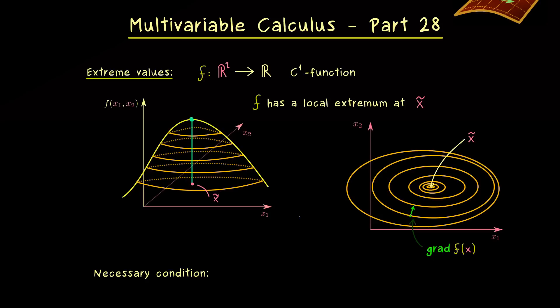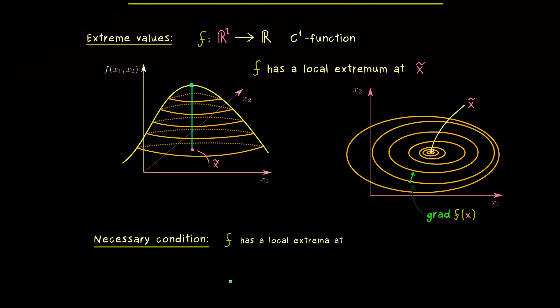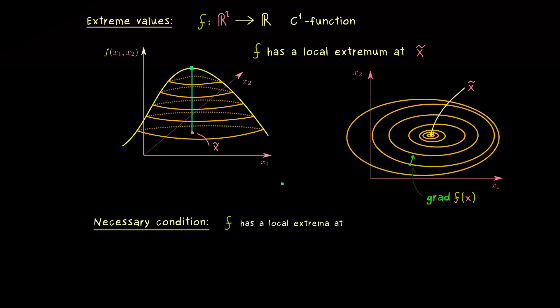This immediately leads us to our necessary condition we have for the existence of local extrema. But please note, this one only holds for C¹ functions. Also, the domain we consider has to be an open set. But then under these conditions, we know that we can only find local extrema at points where the gradient of f is equal to 0.